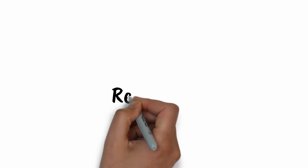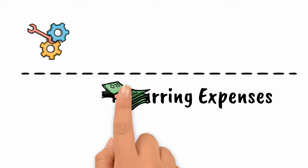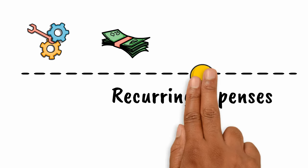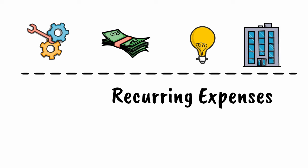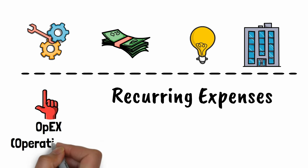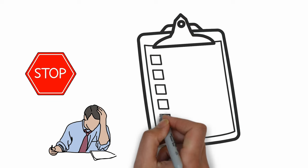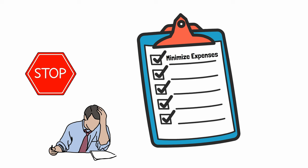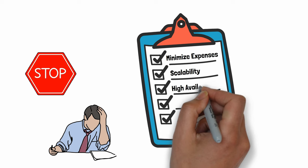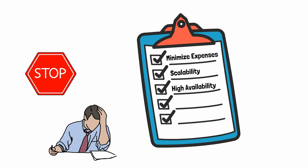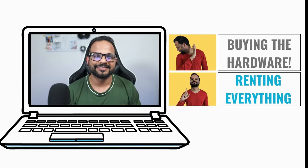You would also have recurring expenses such as cost of regular hardware maintenance, salaries to employees, electricity bills, monthly building rentals, and so on. These recurring operating expenses are called OpEx, or operational expenses. These are nothing but roadblocks for expansion. Your goal is to minimize CapEx and OpEx and build a system that is highly scalable, highly available, and fault-tolerant — a system with built-in security and high performance. And thus, cloud computing.